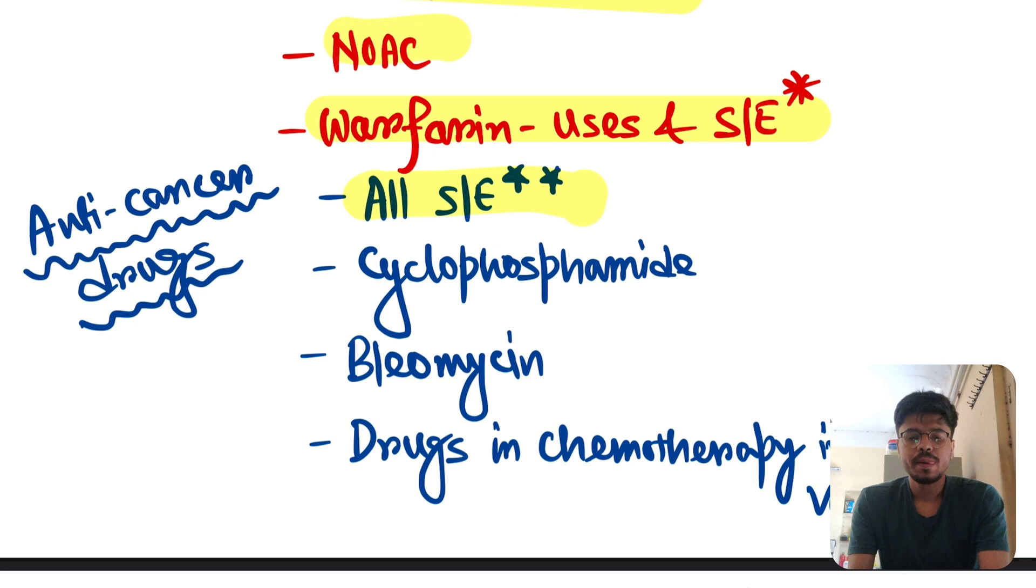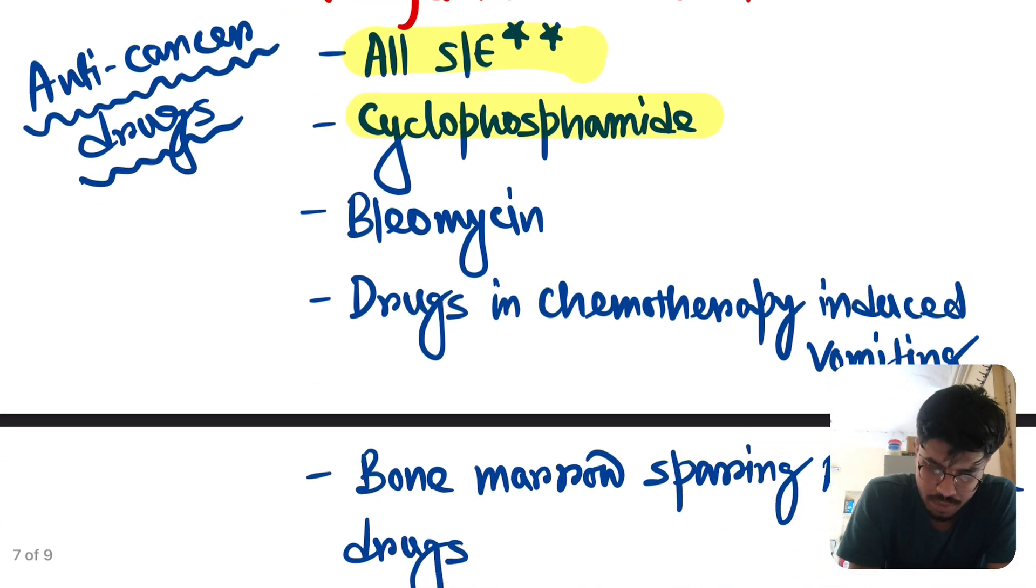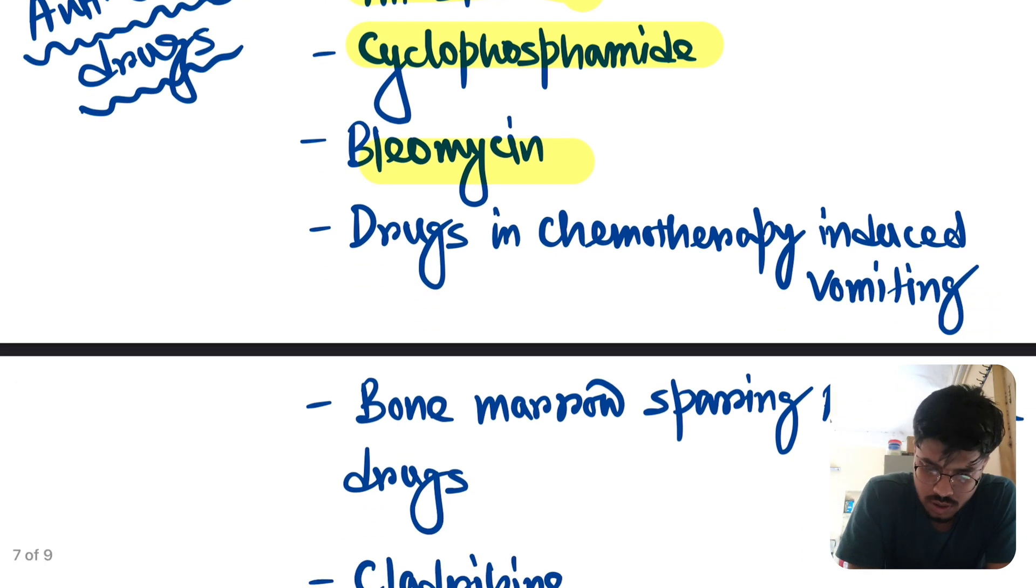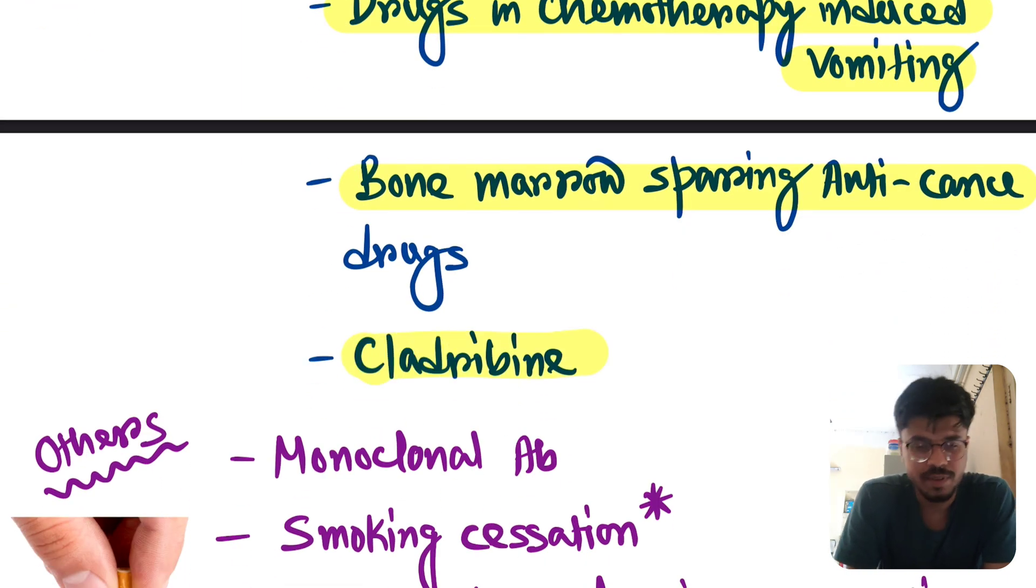Anti-cancer drug. All the side effects. If you do not read in detail about anti-cancer drugs, it's okay. But you should at least read all the side effects. Cyclophosphamide. Please read it. Bleomycin. Side effects. Pulmonary fibrosis. All the side effects are important. Drugs in chemotherapy-induced vomiting. Bone marrow sparing anti-cancer drugs. And cladribine.